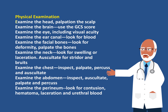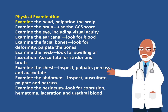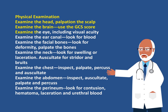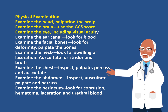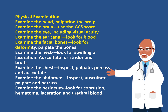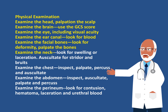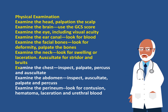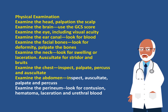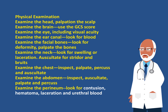The physical exam is the next aspect of the secondary survey. Examine the head: palpate the scalp, examine the brain using the Glasgow Coma Scale score, examine the eyes including visual acuity, and examine the ear canal looking for blood. Examine the facial bones for deformity and palpate the bones. Examine the neck, look for swelling or laceration, and auscultate for stridor and bruits. Examine the chest: inspect, palpate, percuss, and auscultate. Examine the abdomen: inspect, auscultate, palpate, and percuss. Examine the perineum for contusion, hematoma, laceration, and urethral blood.